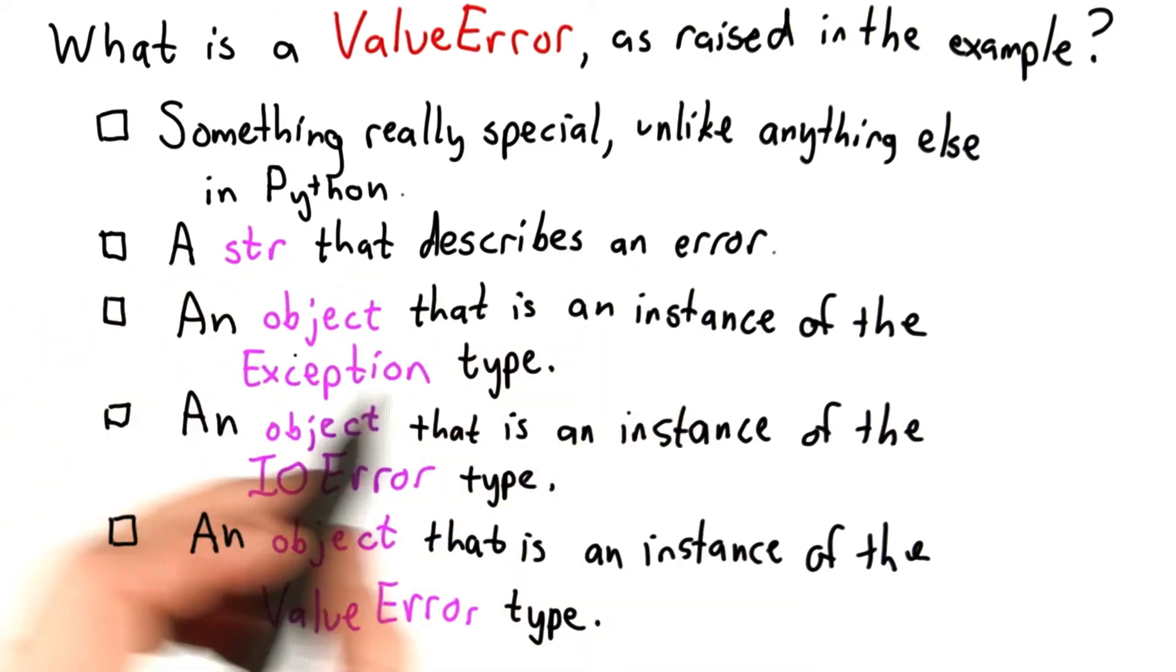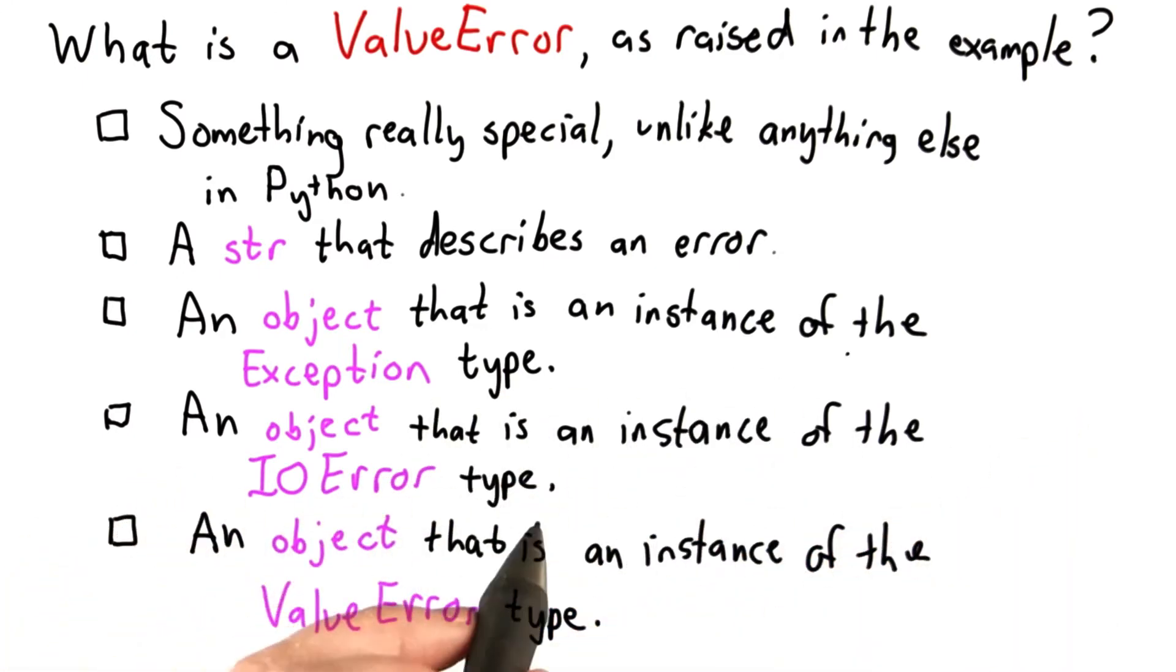It could be an object that is an instance of the exception type. It could be an object that is an instance of the IO error type. It could be an object that is an instance of the value error type.